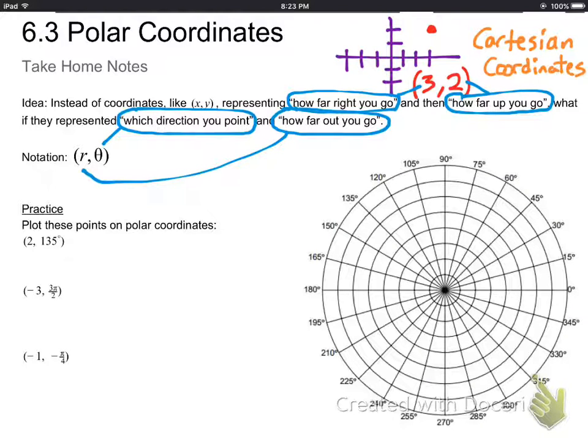Let's look at that. r comma theta is what the two numbers are, theta being the angle you turn, and r being how far out you go. So let's pretend for a second that you're this blue dot right here in the middle.